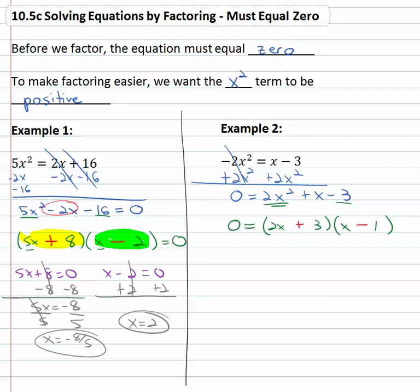So now again we've got two factors equals zero. We can set each factor equal to zero. The 2x + 3 = 0 or the x - 1 = 0.